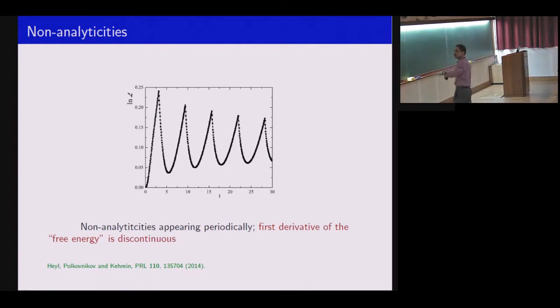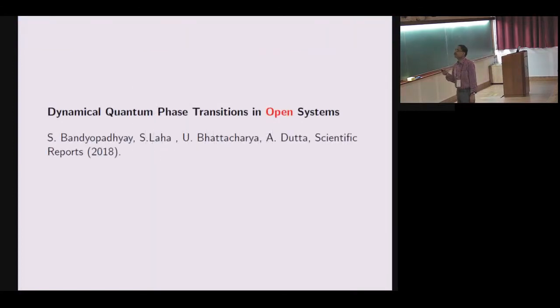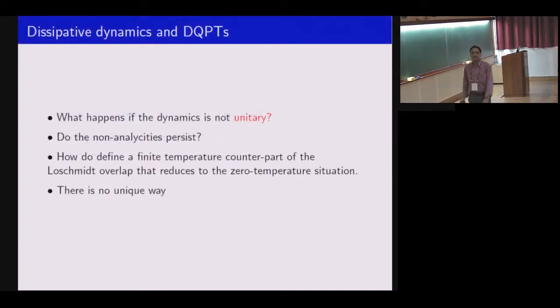But these dynamics I have been talking about are entirely unitary, evolving with the Hamiltonian. The unitary matrix is e to the power i h t. The question then comes: can I have such non-analyticities in open systems? Open systems are problematic because dynamics are no longer unitary. First problem is that dynamics is not unitary, so you don't expect that you simply start with psi, evolve with e to the power i h t, and take the overlap with psi. You have to work with non-analyticities in distance in density matrices.